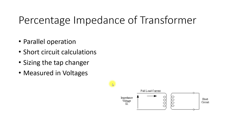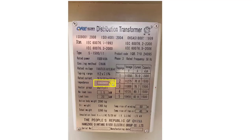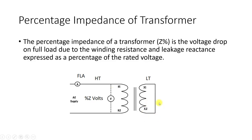The percentage impedance is measured in voltages. The measurement procedure is very interesting and has been tested in the lab. To measure the percentage impedance, you first short-circuit the low-voltage side. Make sure the shorting conductor can carry the full load current of the LV side — calculate the full load current, take a 10–20% margin, and then short the LV winding.